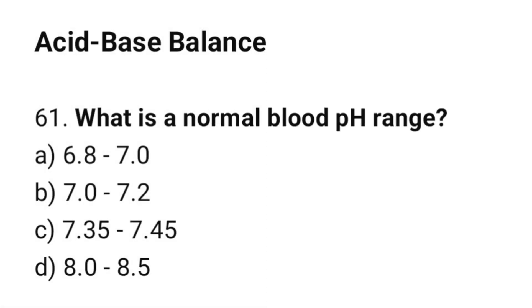Question number 61: What is the normal blood pH range? The correct answer is C: 7.35 to 7.45.